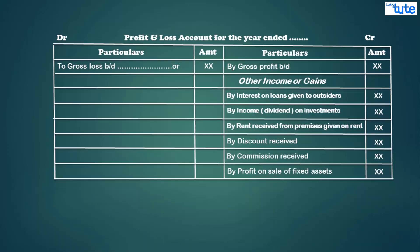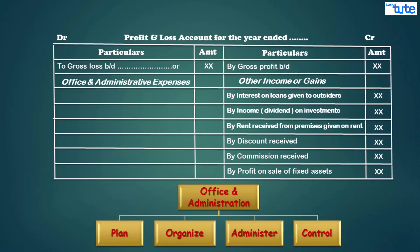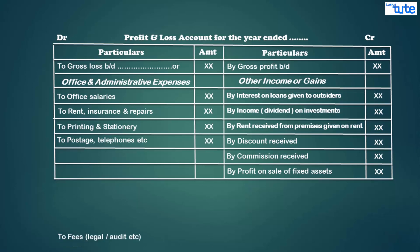On the debit side of the profit and loss account, we have office and administrative expenses. These are expenses incurred to plan, organize, administer, and control the business. Examples include salaries to office staff, rent, rates, insurance, lighting for the office, printing, telephones, postage, legal charges, audit charges, and general expenses.